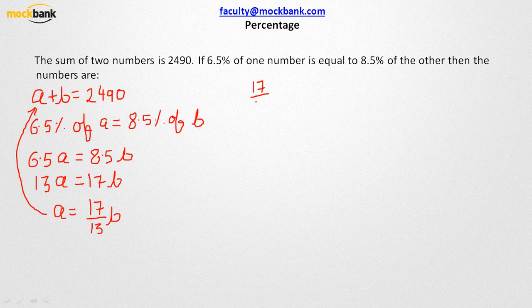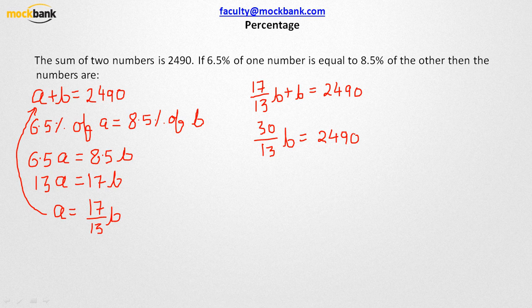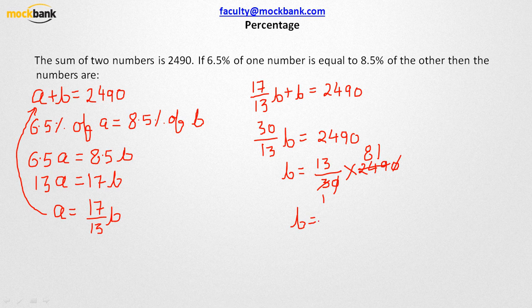Substituting A = 17B/13 into A + B = 2490: 17B/13 + B = 2490, which gives 30B/13 = 2490. Therefore B = (13/30) × 2490 = 1079. Once you know B, subtract from 2490 to find A. Two equations and two variables are solved.